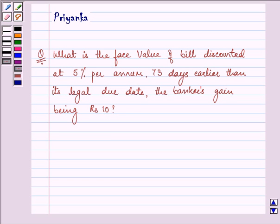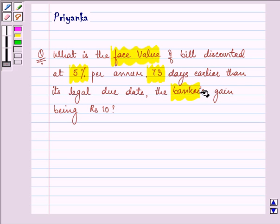Hello friends and how are you all today? The question says, what is the face value of bill discounted at 5% per annum 73 days earlier than its legal due date, the banker's gain being rupees 10.